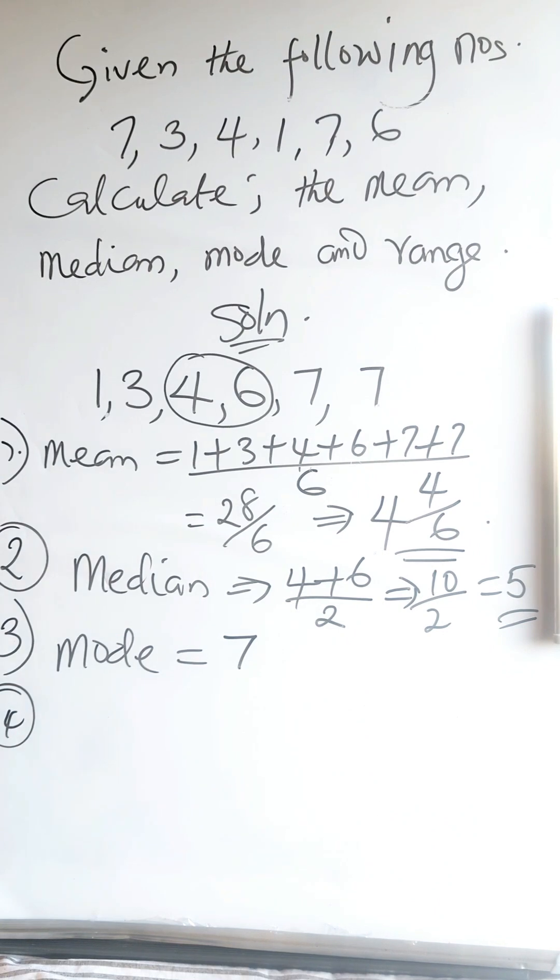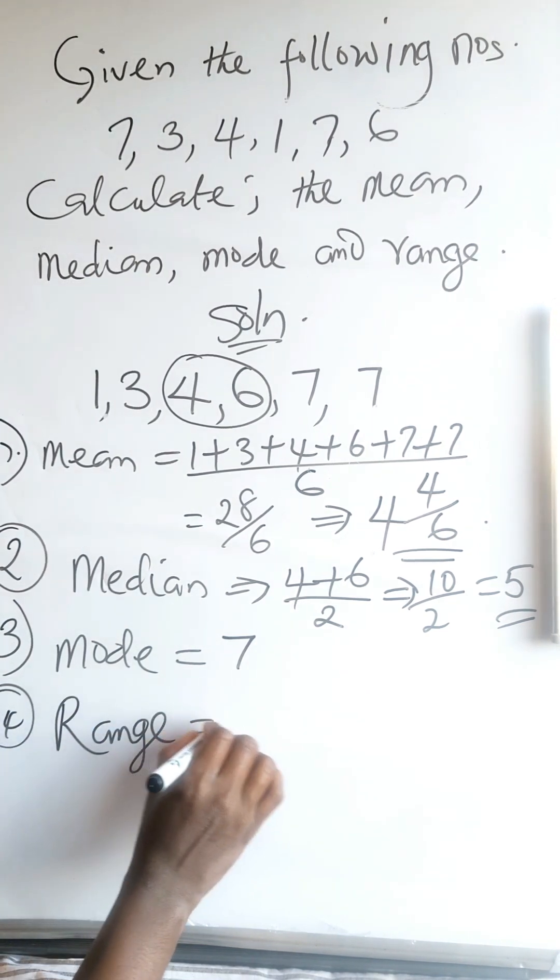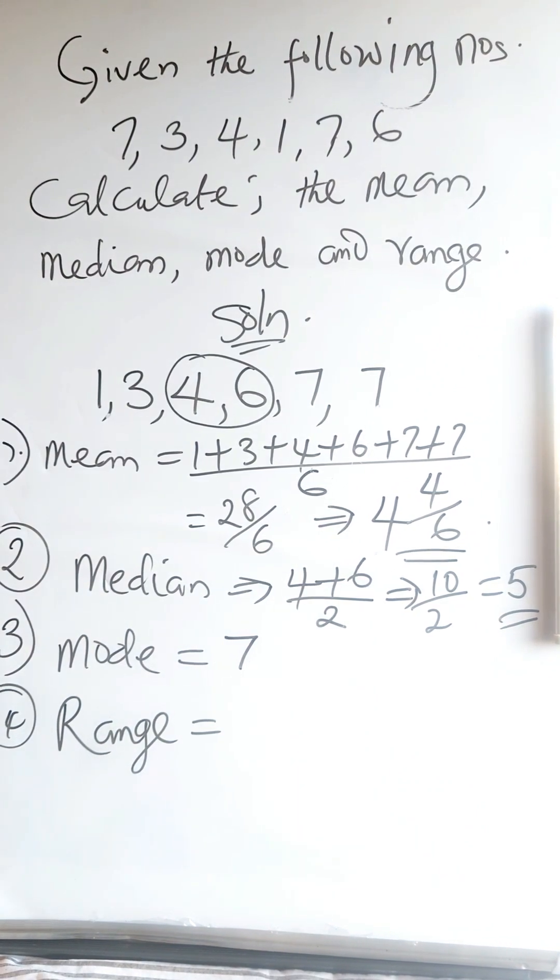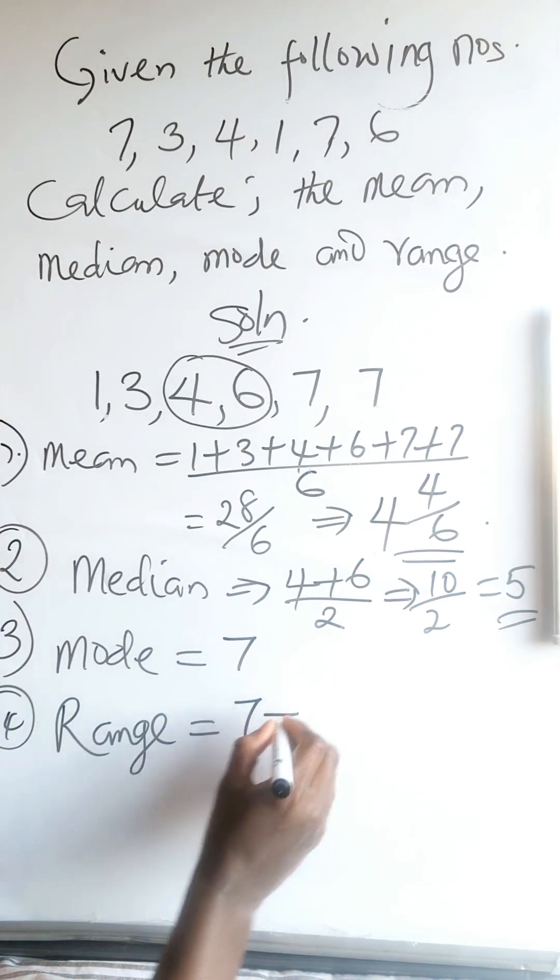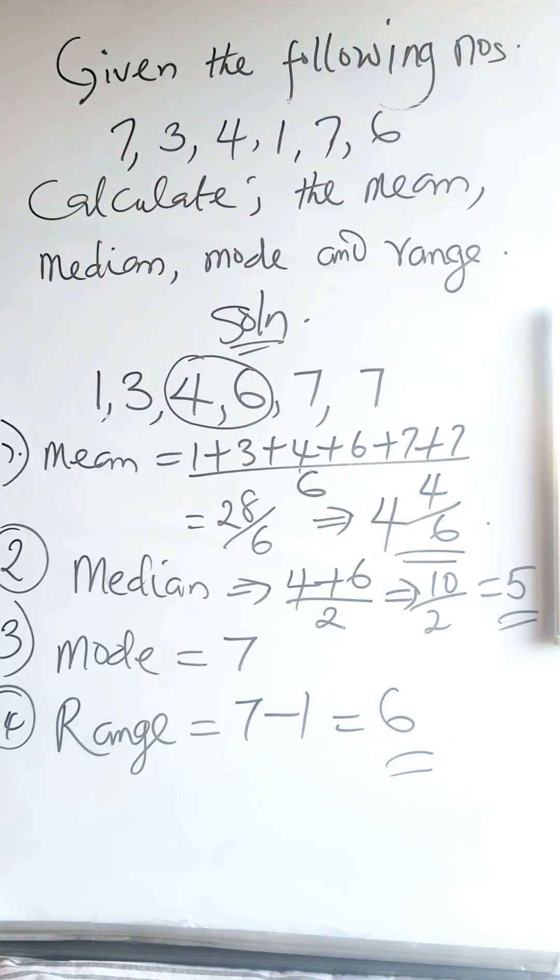Then the last one is the range. The range is the biggest number minus the smallest number. The biggest number we have here is 7 minus smallest number is 1, which equals 6. And that is your answer.